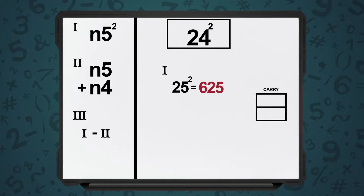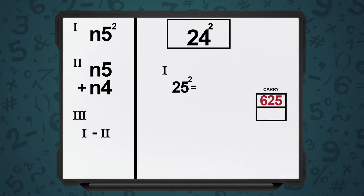Step 1 remains the same. So, if a number is in the format n4 — in this case, I want 24 squared — the corresponding n5 becomes 25. Step 1: we take 25 squared, which is 625.